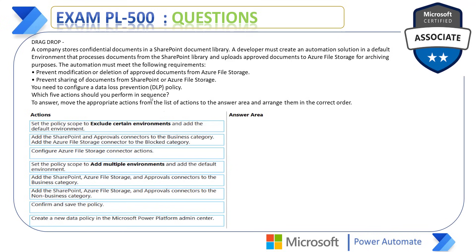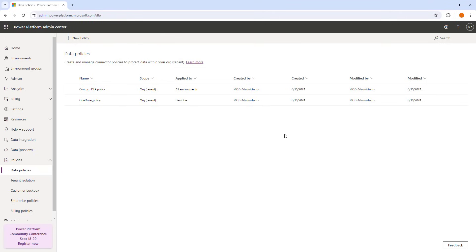The key points in this question: first, the environment is the default environment, and we have to create a DLP policy — that is, a data loss prevention policy. There are three connectors available: first is the SharePoint library, second is the approval connector, and third is Azure file storage. These are the three connectors we are going to use.